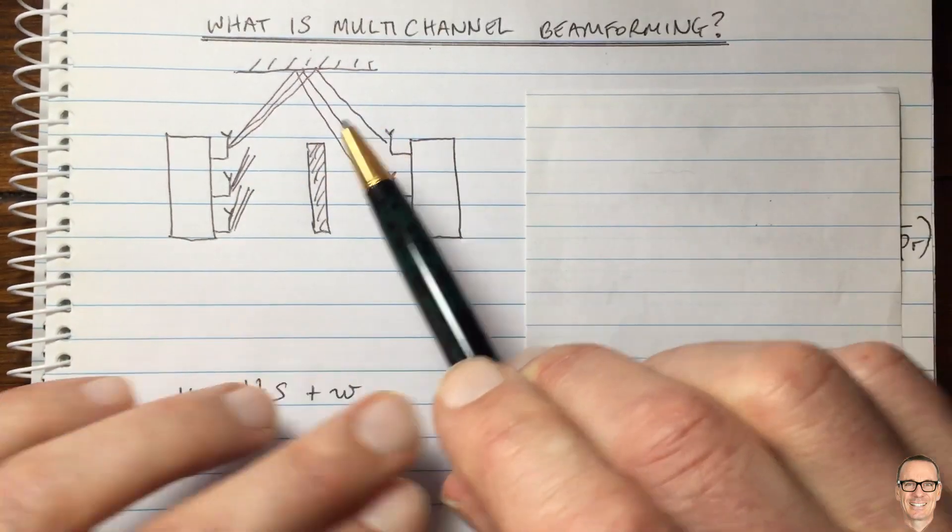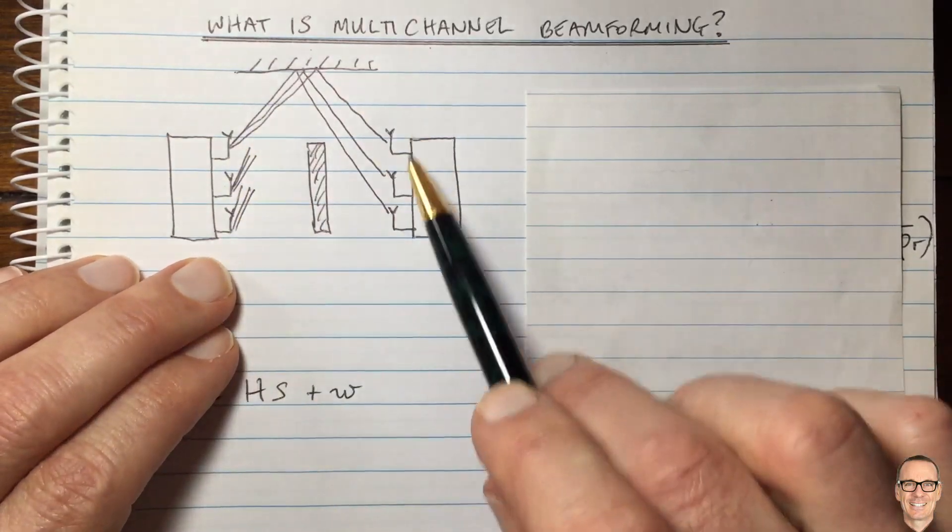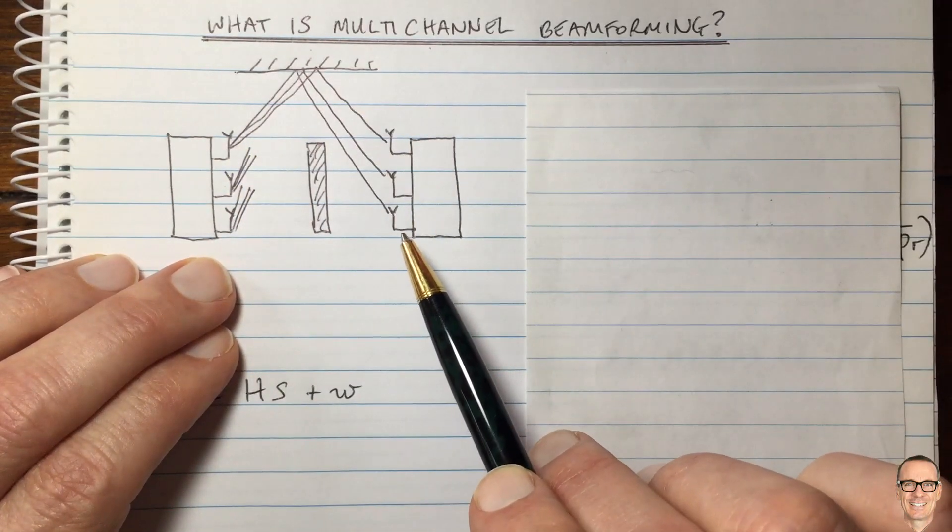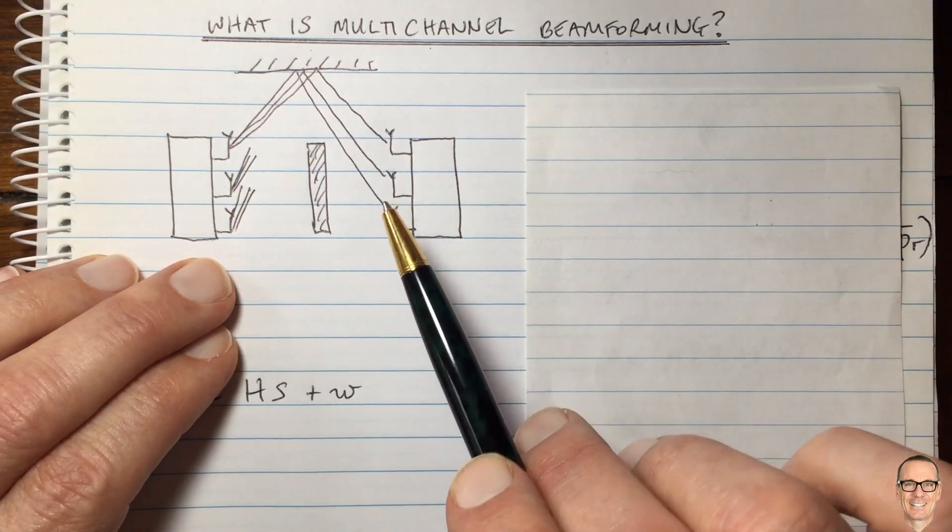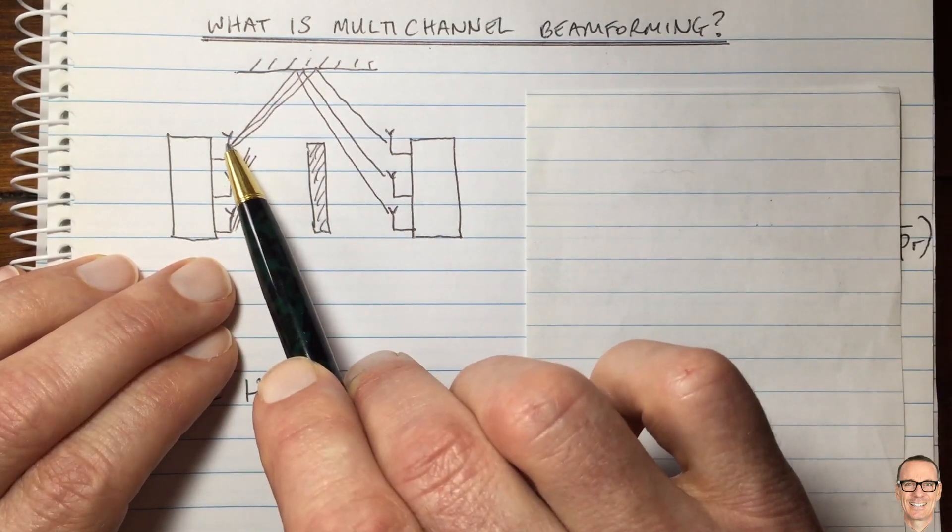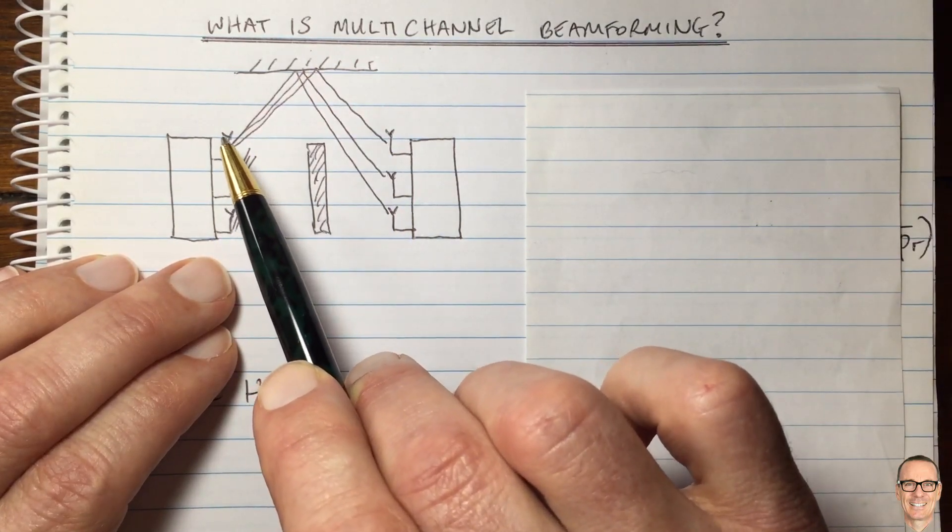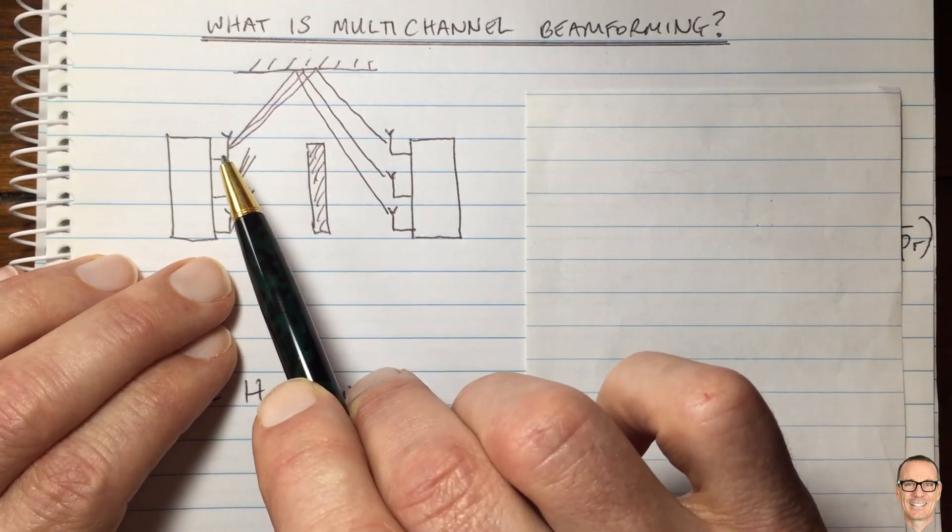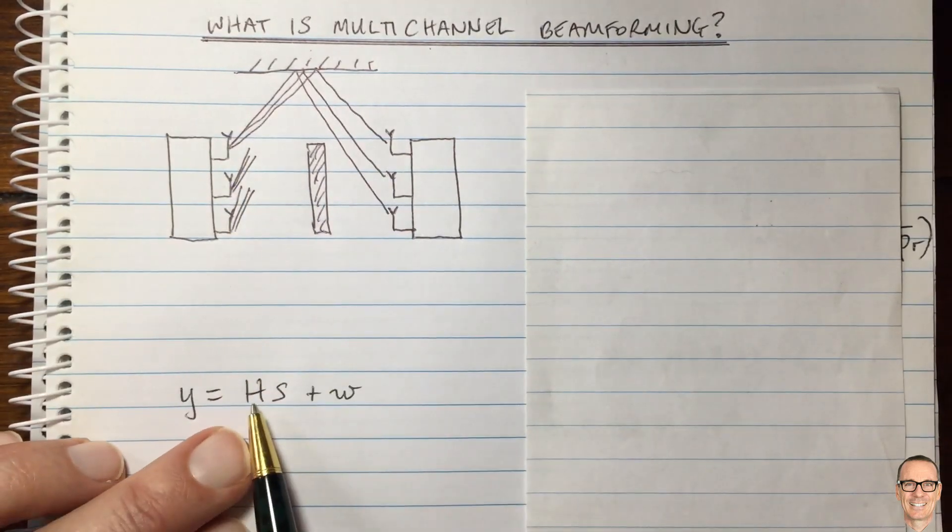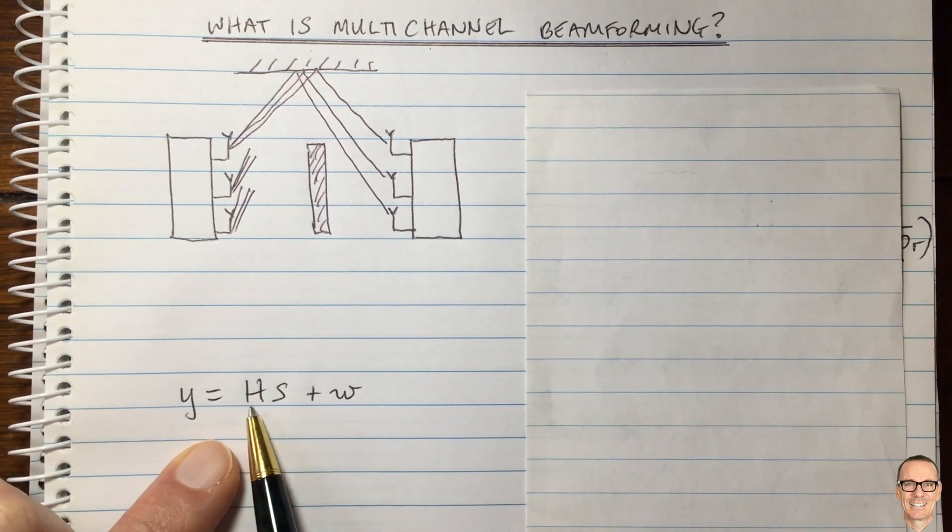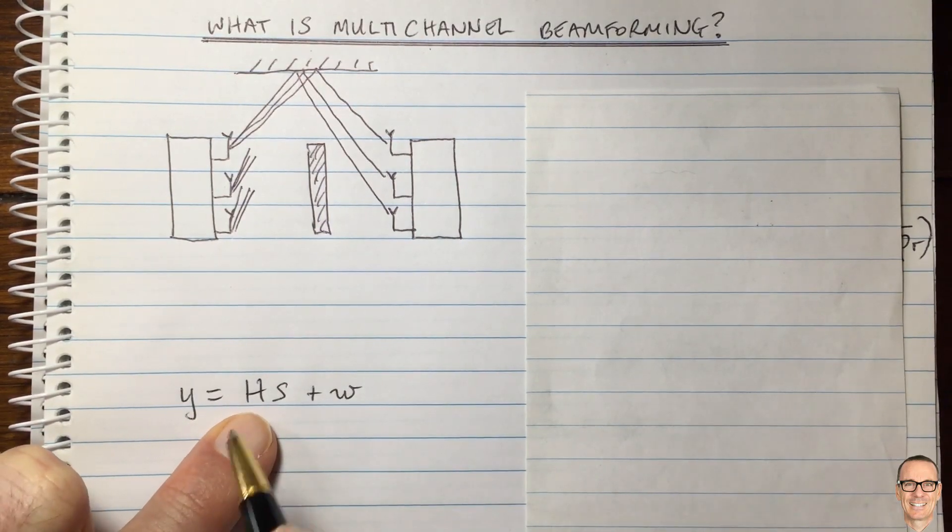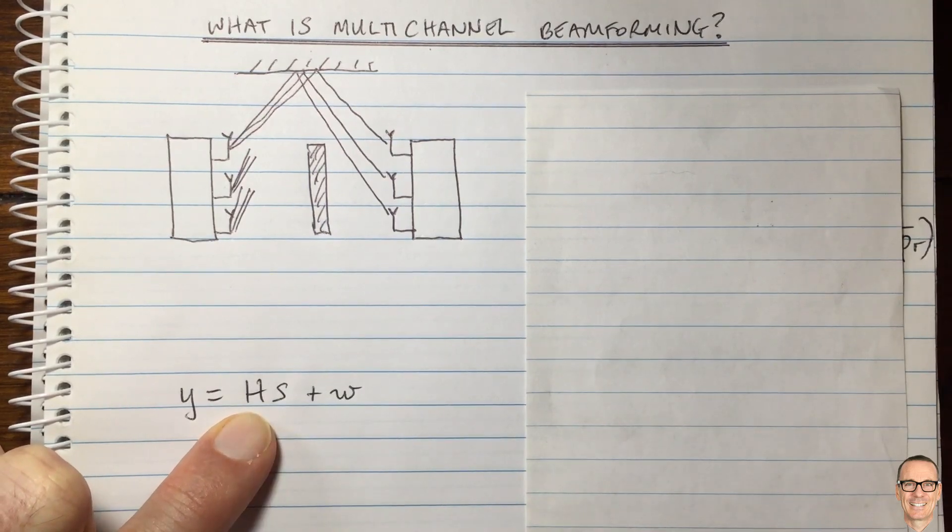In this case with three antennas at each end of the communication link, you would be getting nine different paths. These would be represented by different amplitudes and phases in the baseband, and this can be drawn in a matrix. We can write that into a matrix. In this case, it would be three by three.